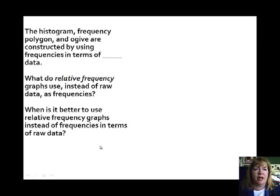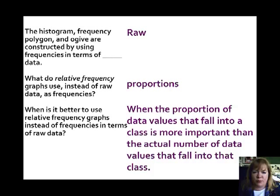The histogram, frequency polygon, and ogive are constructed by using frequencies in terms of raw data. What do relative frequency graphs use instead of raw data as frequencies? They use proportions. When is it better to use these than raw data? Well, this is a long explanation. It says when the proportion of data values that fall into a class is more important than the actual number of data values that fall into that class.